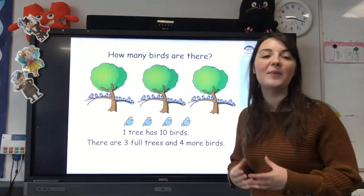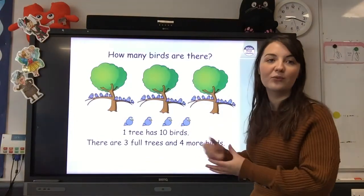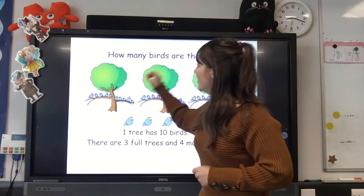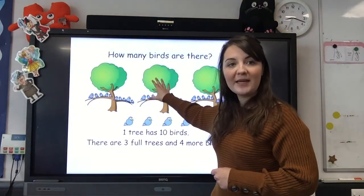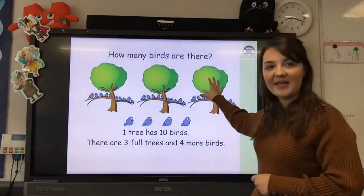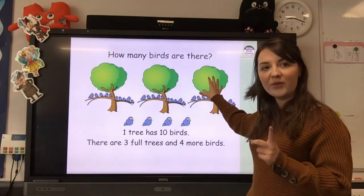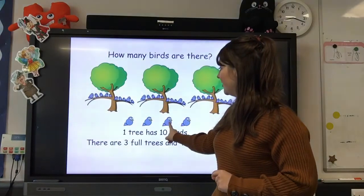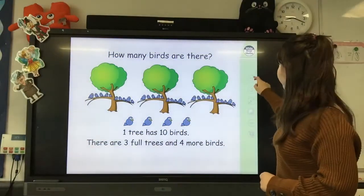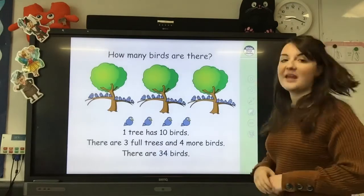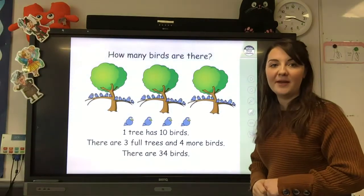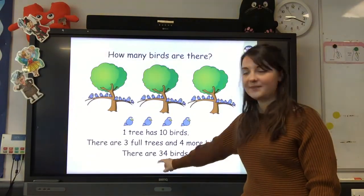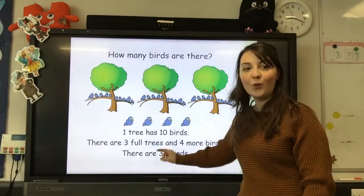We can use that to help us count how many birds there are all together. So we're first going to count our tens. 10, another 10 is 20, another 10 is 30. One more than 30 is 31, 32, 33, 34. There are 34 birds. So 34 has 3 tens and 4 ones.